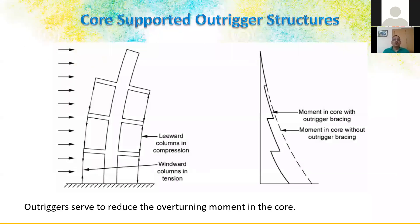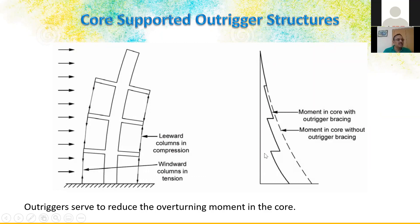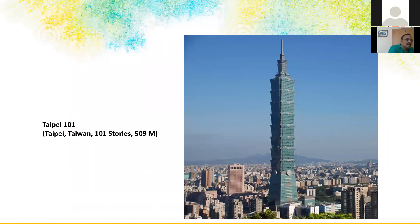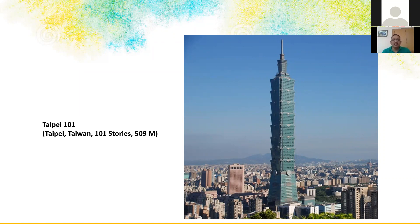The core-supported outrigger system has a central core with columns connected by a rigid diaphragm outrigger. Without the outrigger, the bending moment diagram is large; the outrigger reduces these forces significantly. The best outrigger system example is Taipei 101 — in the lower 60 meters, super columns are used instead of outriggers, and beyond that it uses outrigger action. Value engineering plays a great role in high-rise buildings, and we should study different cases when deciding the structural system.